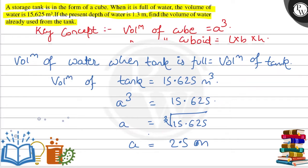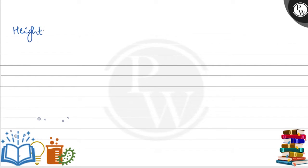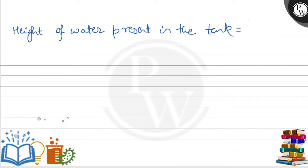Height of water present — we have to find out here. If we have one side of the cube, then the height of the cube will be known. Depth given is 1.3. So height of water present in the tank will be equal to 2.5 minus 1.3, which is equal to 1.2 meters.